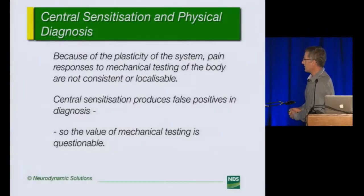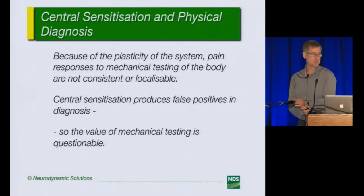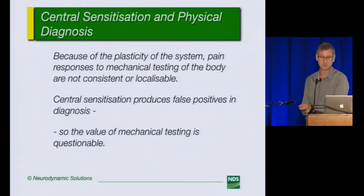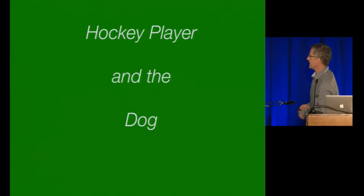Carpal tunnel syndrome produces central changes — central sensitization. What's fascinating is, if central sensitization is such a bad guy for differential diagnosis, why do the tests do so well in diagnostic efficacy studies when compared with conduction tests? I'll talk about that later.